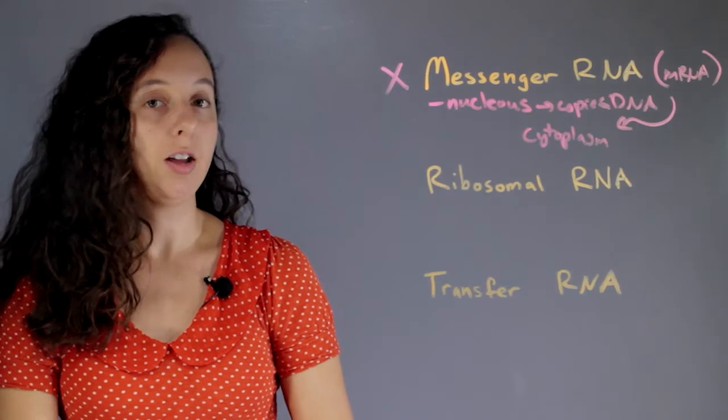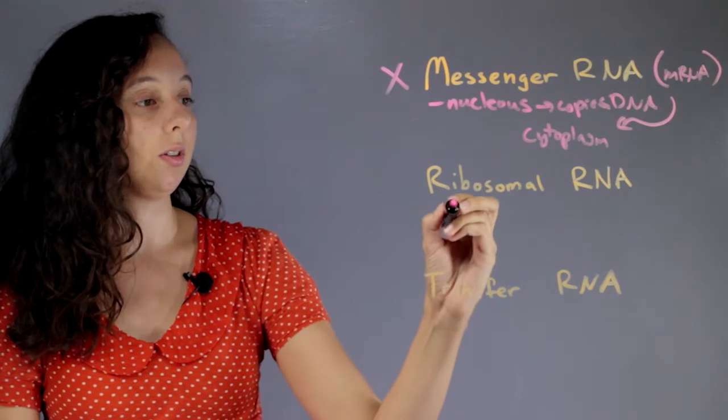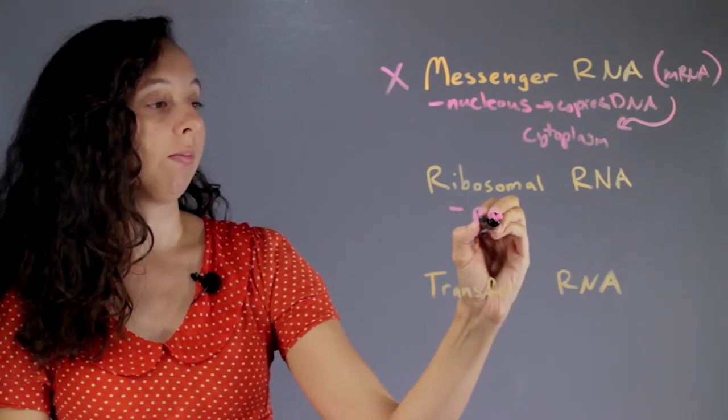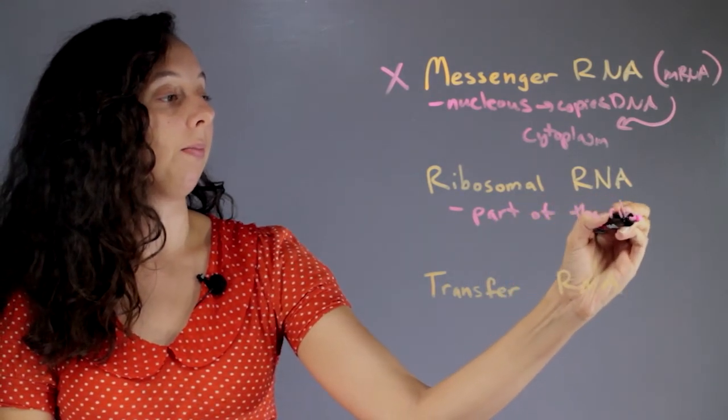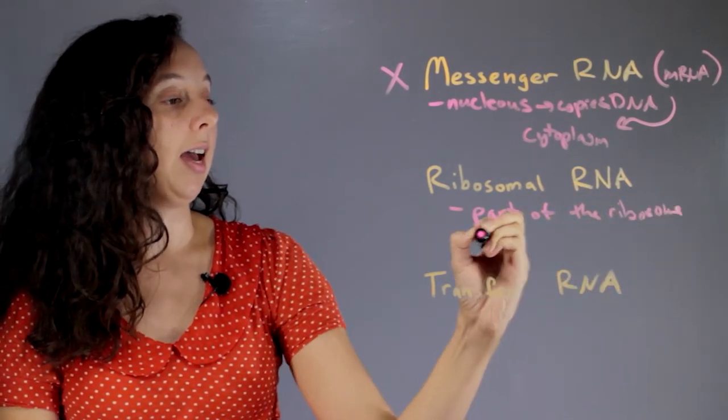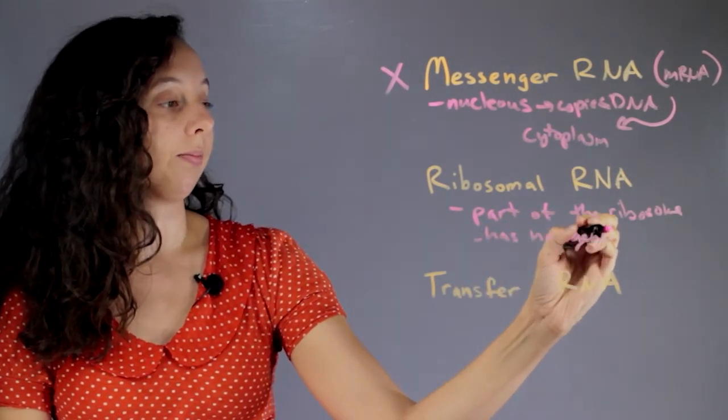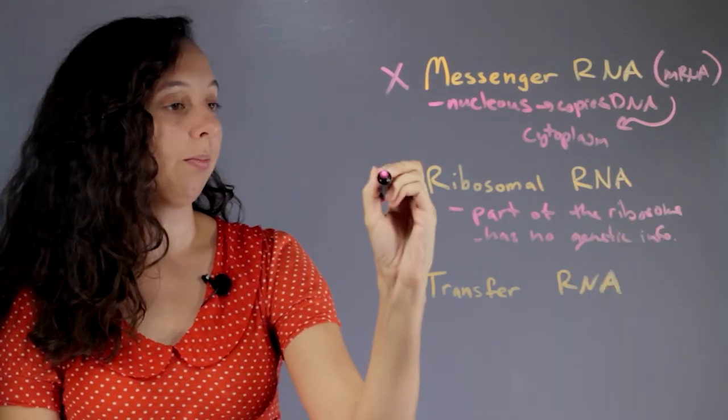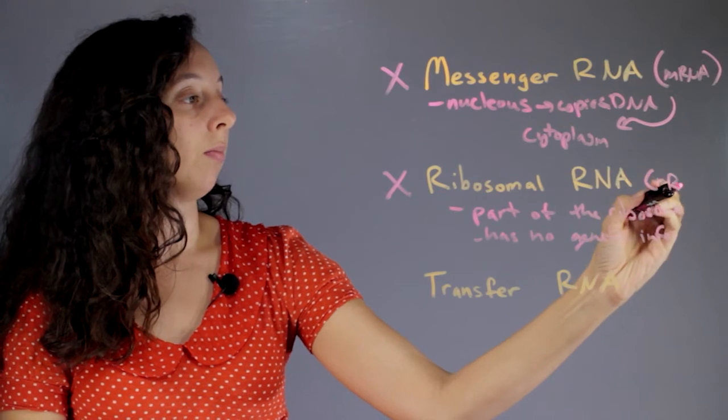Ribosomal RNA, okay, it seems like it could do it, right? It's called ribosomal, but this RNA is just a part of the ribosome and it has no genetic information. So too bad. Also known as rRNA.